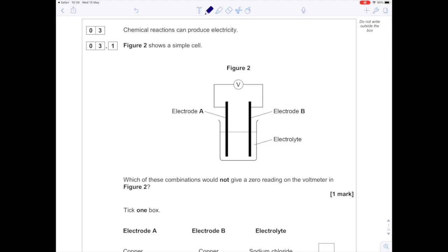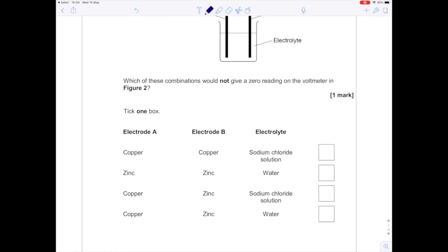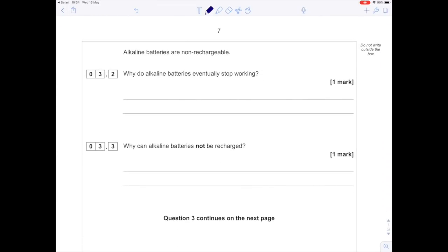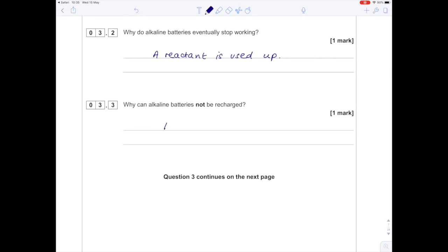Chemical reactions can produce electricity. Figure 2 shows a simple cell. Which combinations would give a reading on the voltmeter? Copper and copper wouldn't work because they're the same metal with the same reactivity, and zinc and zinc wouldn't work for the same reason. We need both copper and zinc as electrodes, and we need a substance which dissolves into ions, which is why we need the sodium chloride solution. Option three is correct. Alkaline batteries eventually stop working because a reactant is used up. Alkaline batteries can't be recharged because the reaction is not reversible.